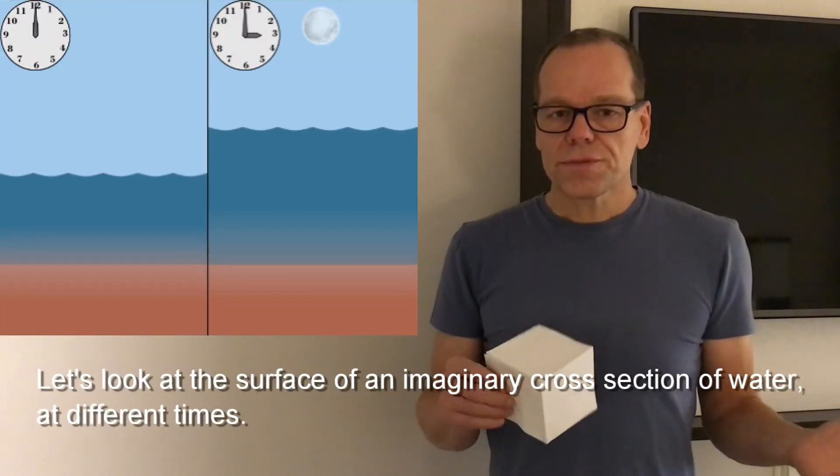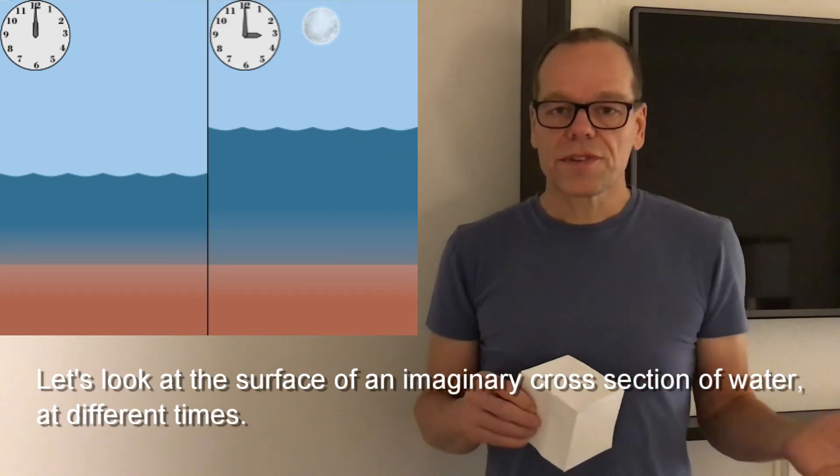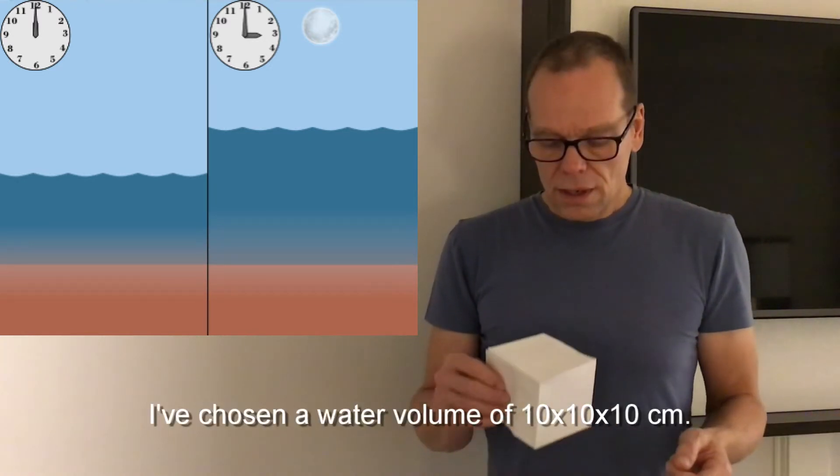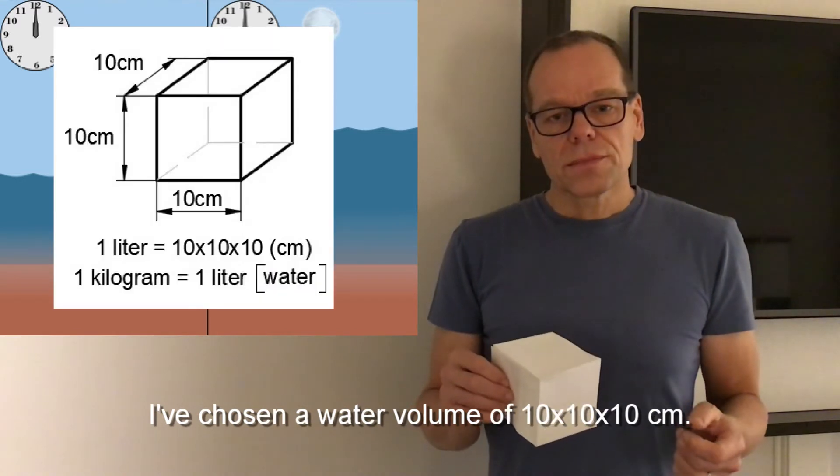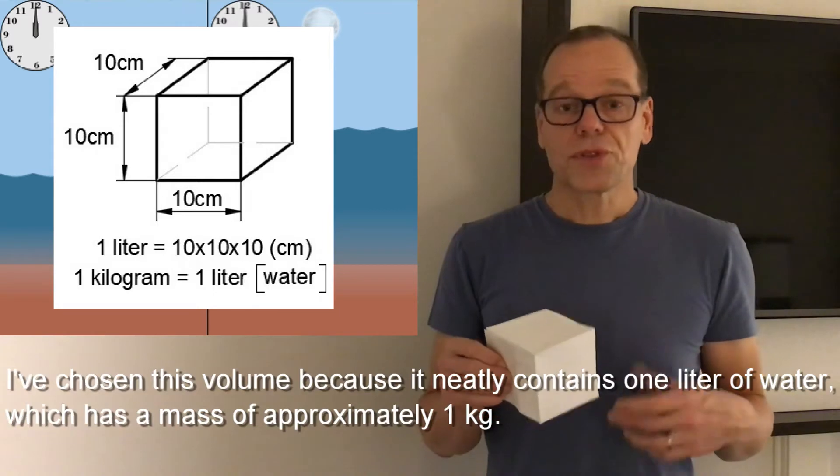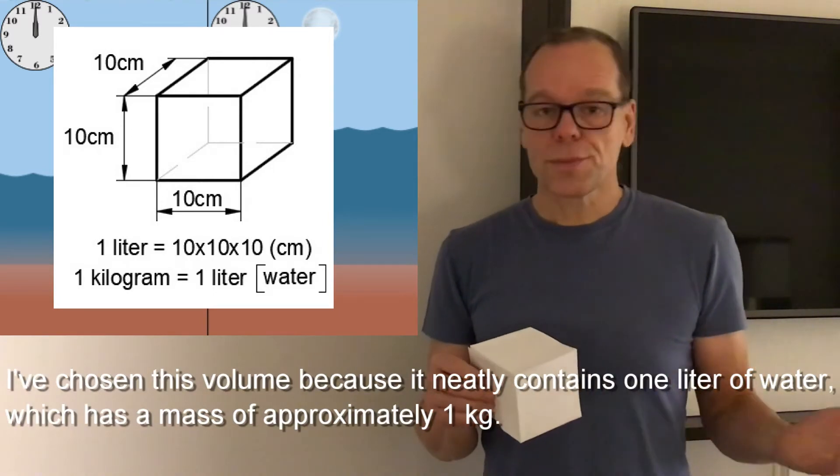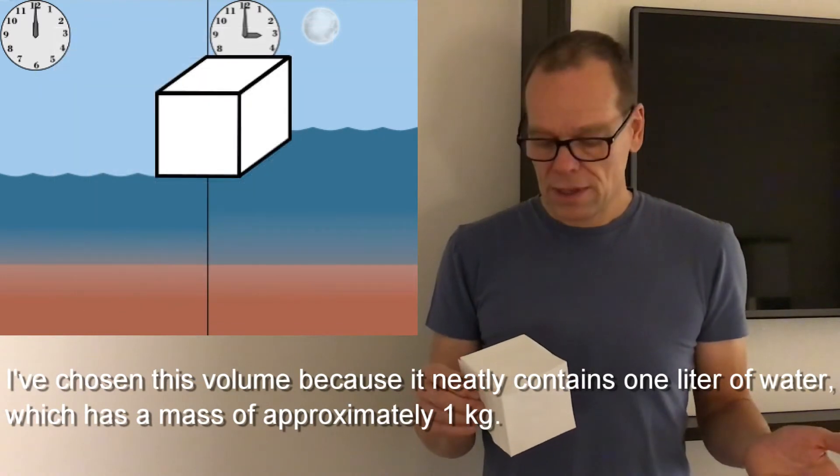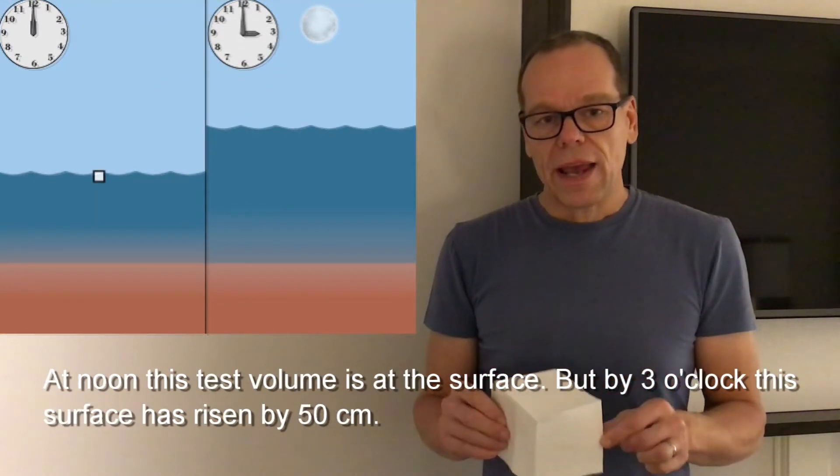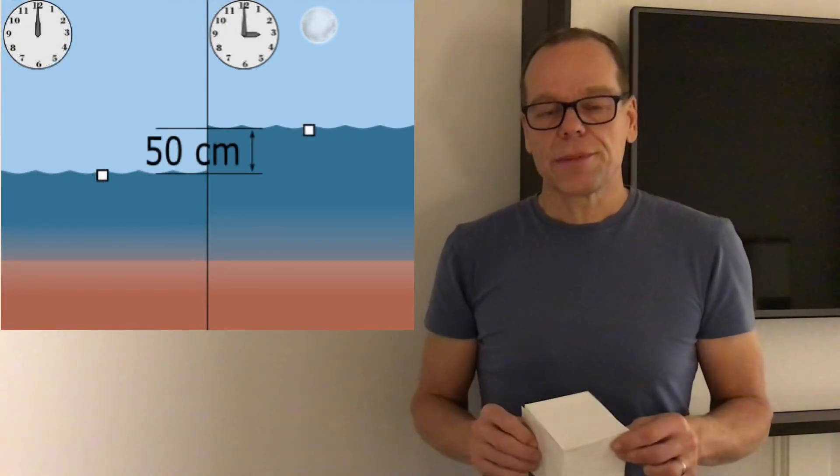Let's look at the surface of an imaginary cross-section of water at two different times. I've chosen a water volume of 10 by 10 by 10 centimeters. I've chosen this volume because it neatly contains one liter of water, which is approximately one kilogram.